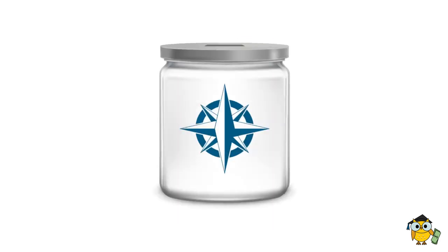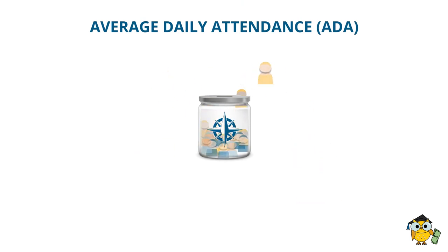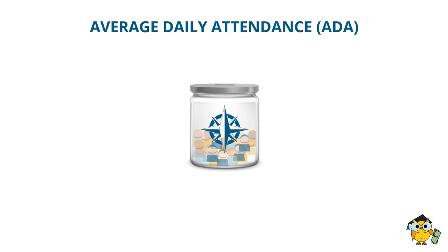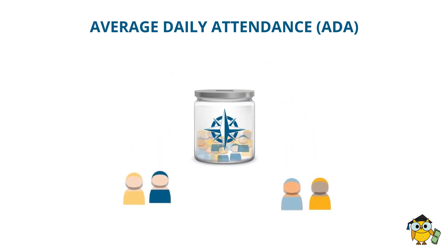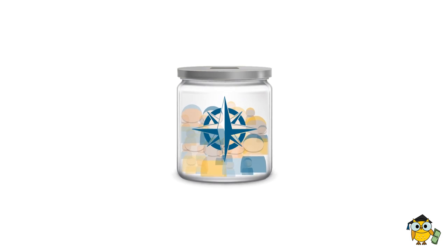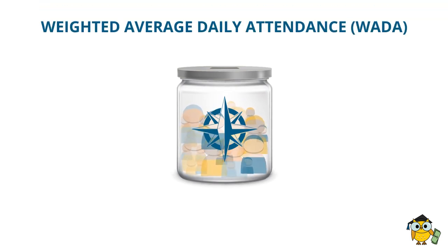The biggest jar of revenue for a school district is the tier one entitlement. Let's look at how the size of this jar is determined. As students attend school — called the average daily attendance, or ADA — the size of this jar grows. But not every kid goes to school every day, so the jar shrinks a little because we do not get funding for students not in attendance. Students with certain characteristics grow the jar by an even bigger amount, called the weighted average daily attendance, or WADA.